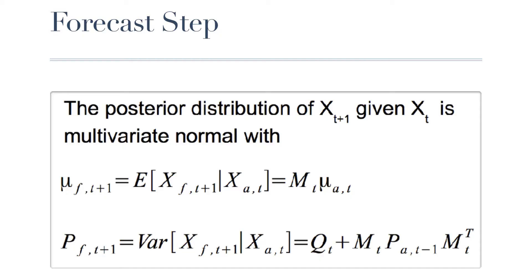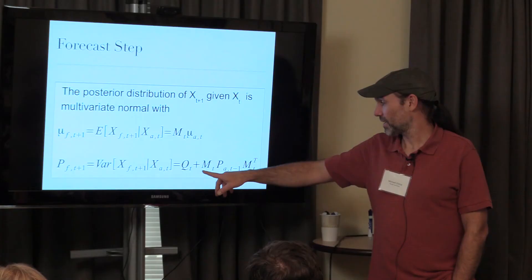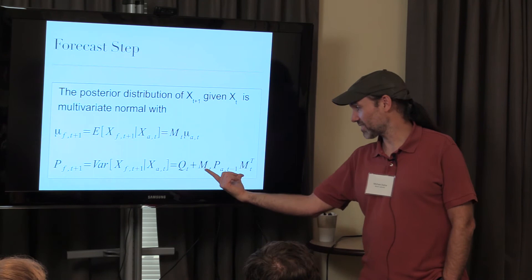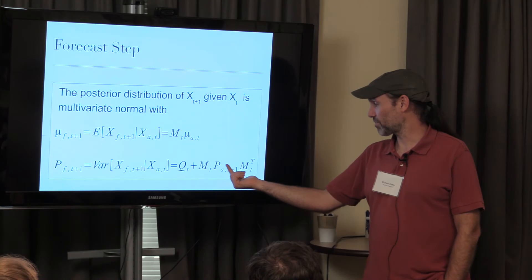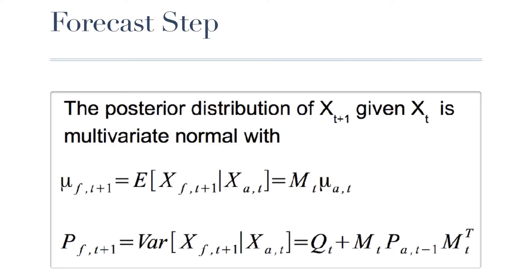The forecast step is more straightforward. The mean of the forecast—the expected value of f given x_A—is just M times the mean of the analysis. The covariance of the forecast has process error Q plus M times the analysis covariance matrix times M-transpose, which is mathematically directly analogous to m-squared times variance. It's just that now the covariance is a matrix and M is also a matrix.